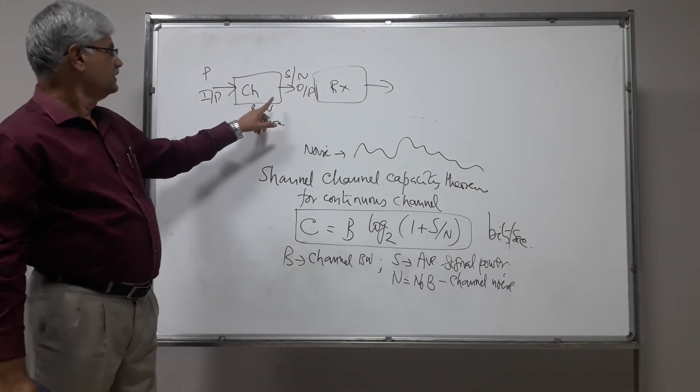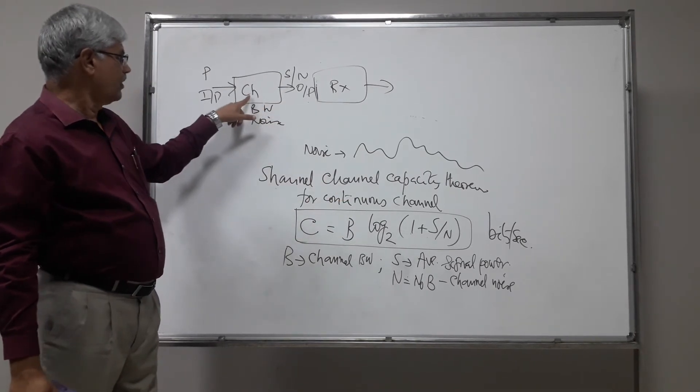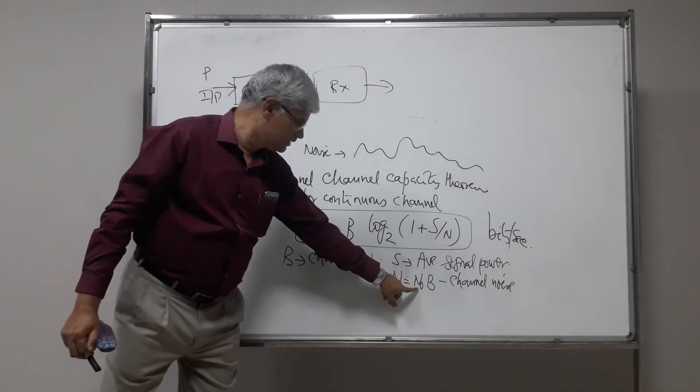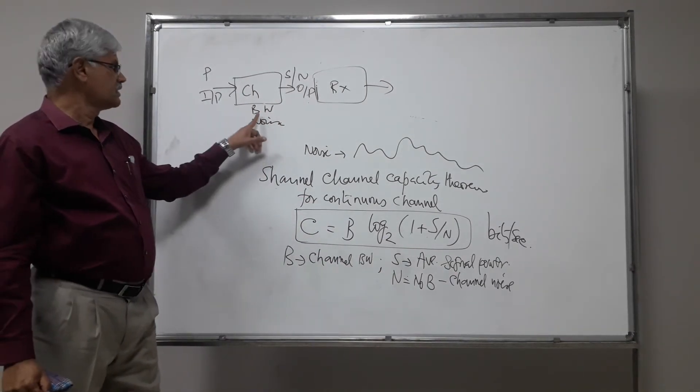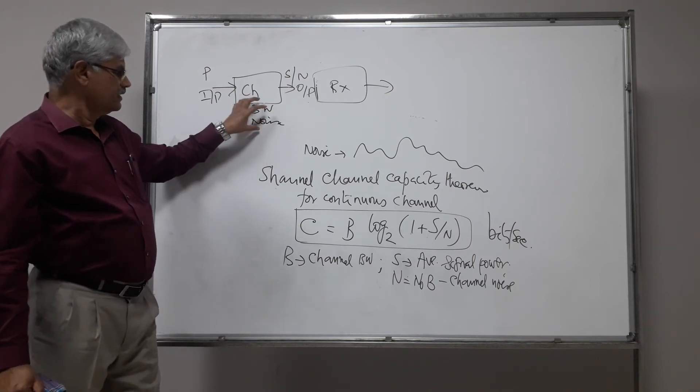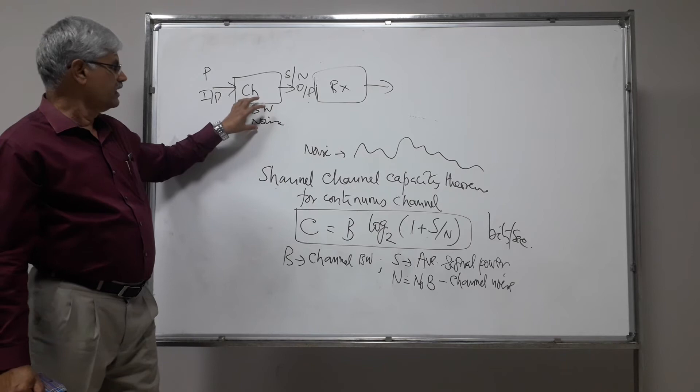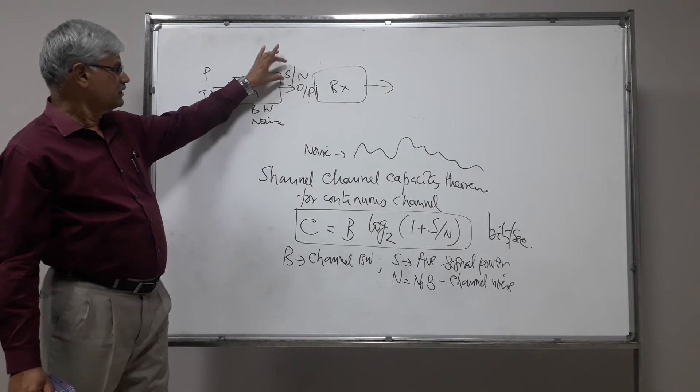And if the signal to noise ratio, the noise in the channel, the N0 is the power spectral density, so many watts per hertz, and bandwidth is B. So if B is the channel bandwidth and N is the noise power, and S is the signal power that is received at the input of the receiver.